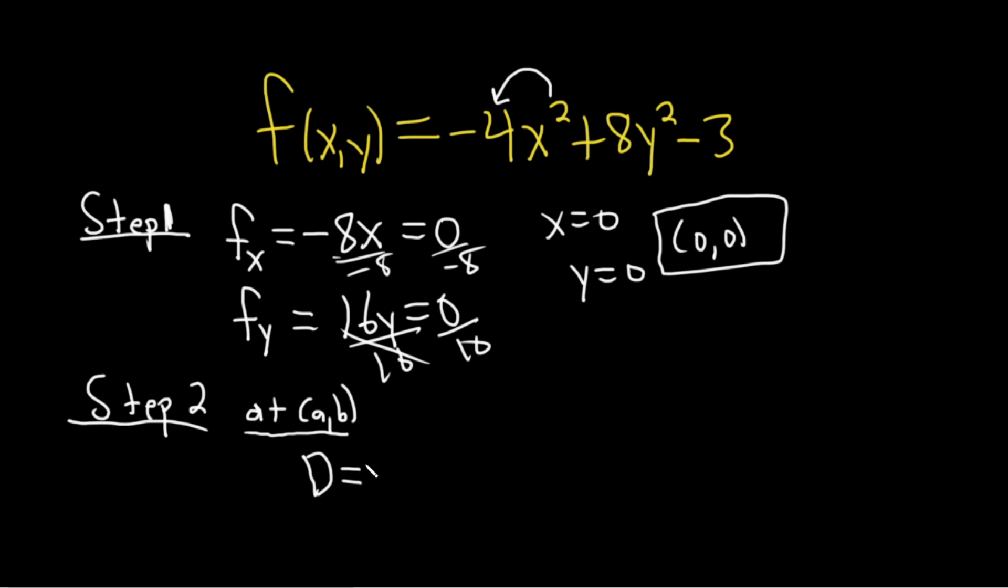So big D we're going to define that as fxx again at AB times fyy minus fxy squared. This is called the discriminant.